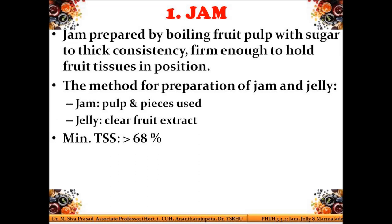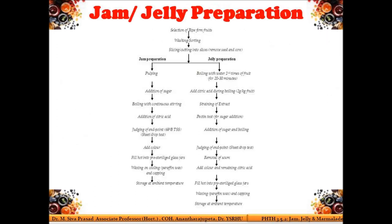There is a slight difference between jam and jelly. Jam consists of the entire fruit pulp including pieces, whereas jelly is a clear fruit extract where pectin is separated from the fruit pulp. The fruit pulp is cooked along with sugar to a TSS of around 68 percent, and that becomes your jam.